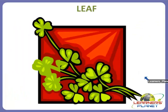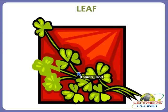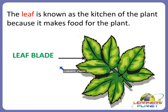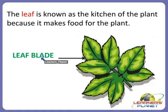First we will study about the leaf. Leaves grow on stems. The leaf is known as the kitchen of the plant because it makes food for the plant. Always remember that the leaf is the kitchen of the plant. The flat surface of the leaf is called the leaf blade.